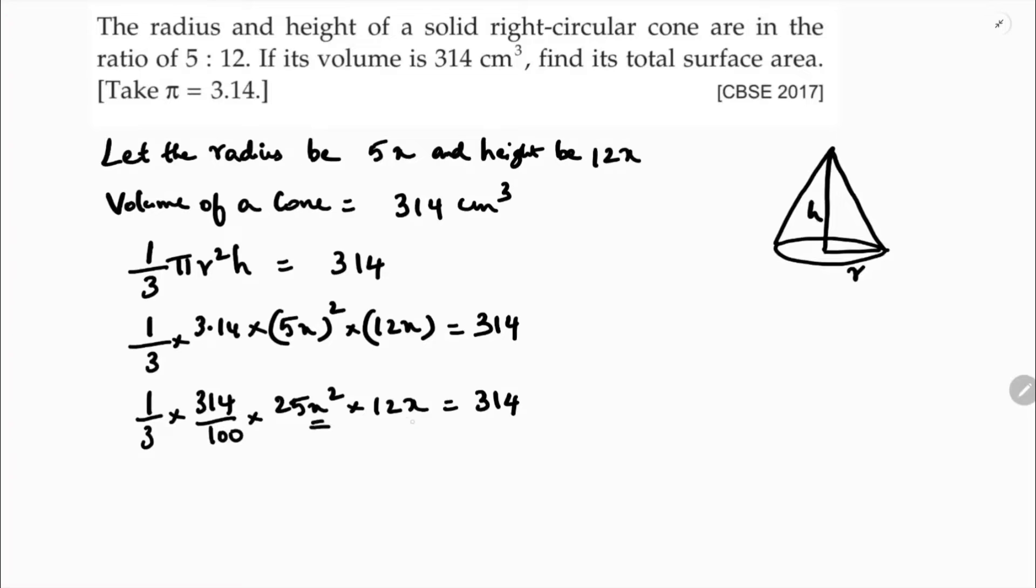Now see here x square into x, that is x cube equals 314. All the values I'll transpose to the right side. 3 and 100 will come to the numerator. In the denominator, 314, this value, 25 into 12.